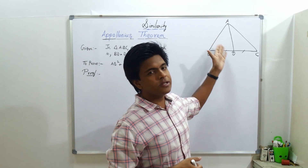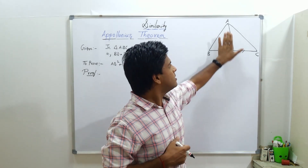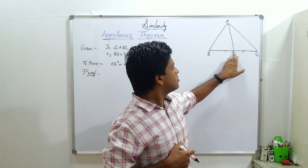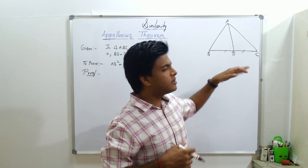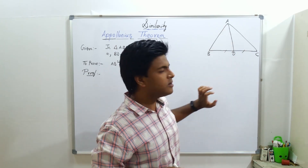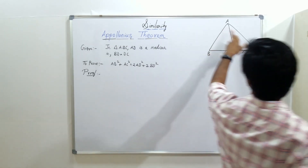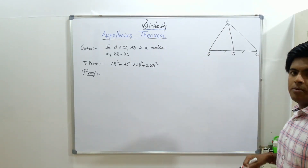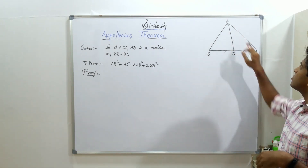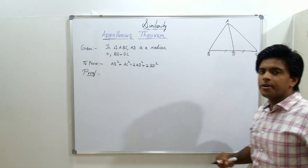It is very simple. In a triangle ABC, if AD is a median — a median is a line from a vertex to the base such that it divides the base side into equal parts — so AD is a median. And we need to prove that AB square plus AC square equals 2 AD square plus 2 BD square.